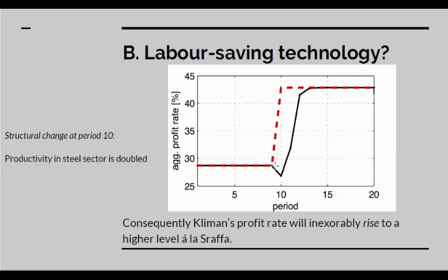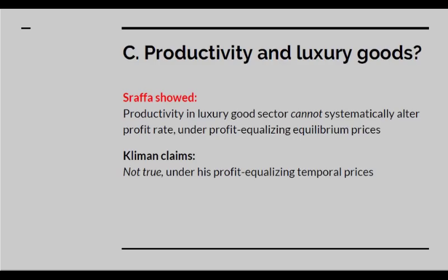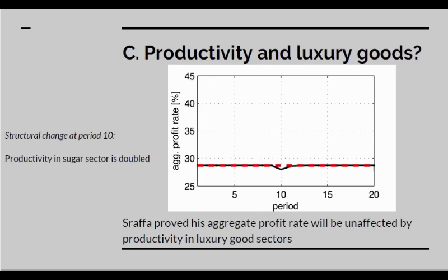Now let's consider the topic of productivity in the luxury goods sector. Sraffa showed that productivity in the luxury goods sector cannot systematically alter the profit rate under profit-equalising equilibrium prices. Kliman claims this isn't true under his profit-equalising temporal prices. We run the model and at period 10 we double the productivity in the sugar sector. In Kliman's case, you get a slight fall in the rate of profit — which immediately disproves his claim, since if he works by his normal method it should move in the other direction. Even so, it's only a one-period blip; it converges to the Sraffian result.